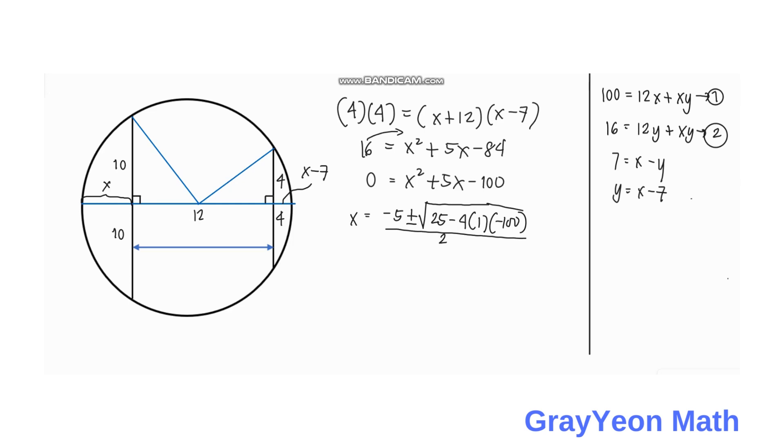We have X is equal to negative 5 plus or minus the square root of 425, all over 2. But 425 can be written as 25 times 17. So we can say that X is equal to negative 5 plus or minus 5 square root of 17, all over 2.